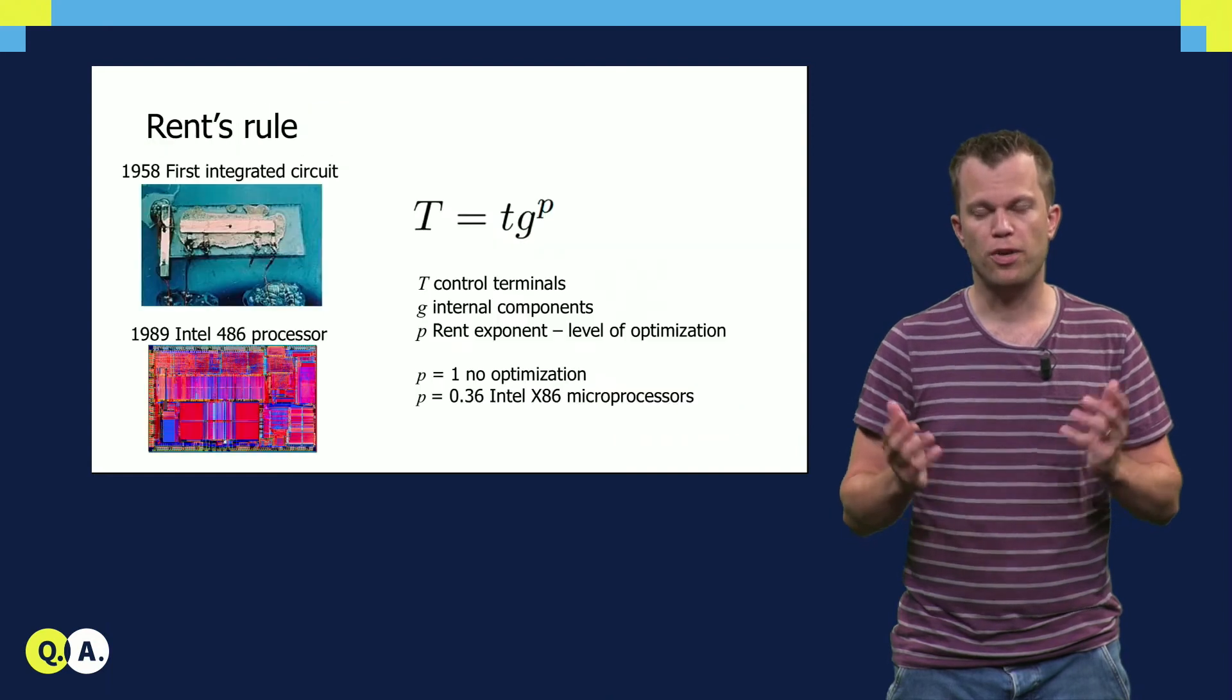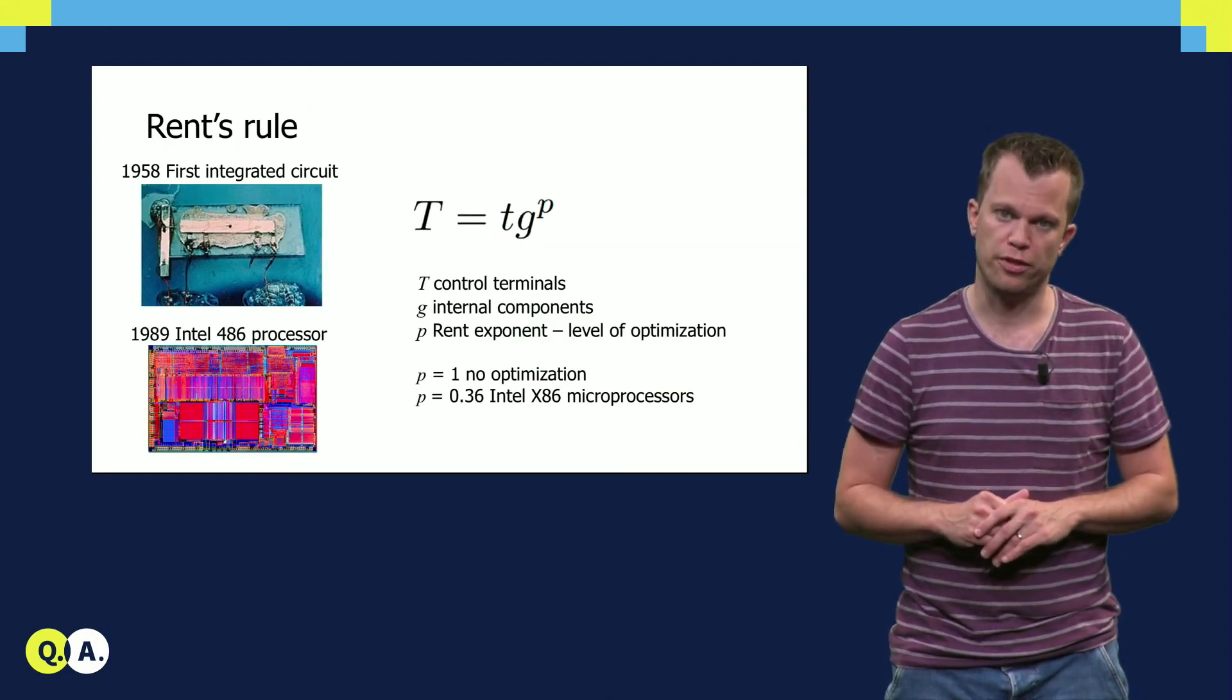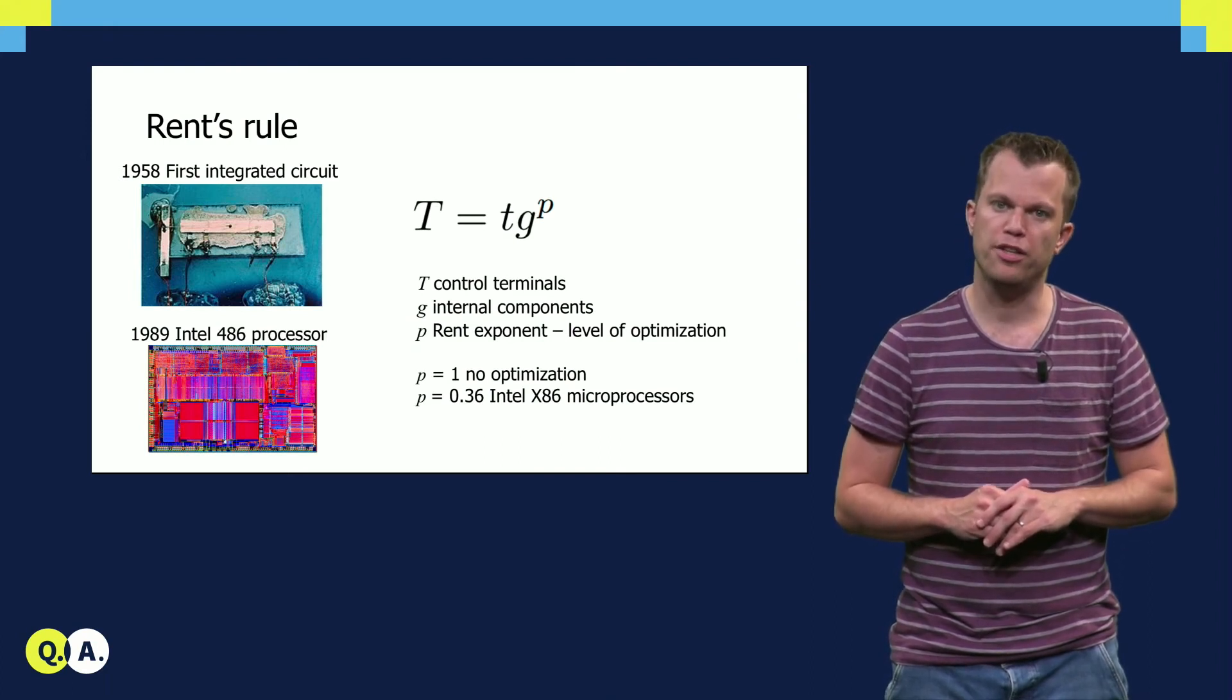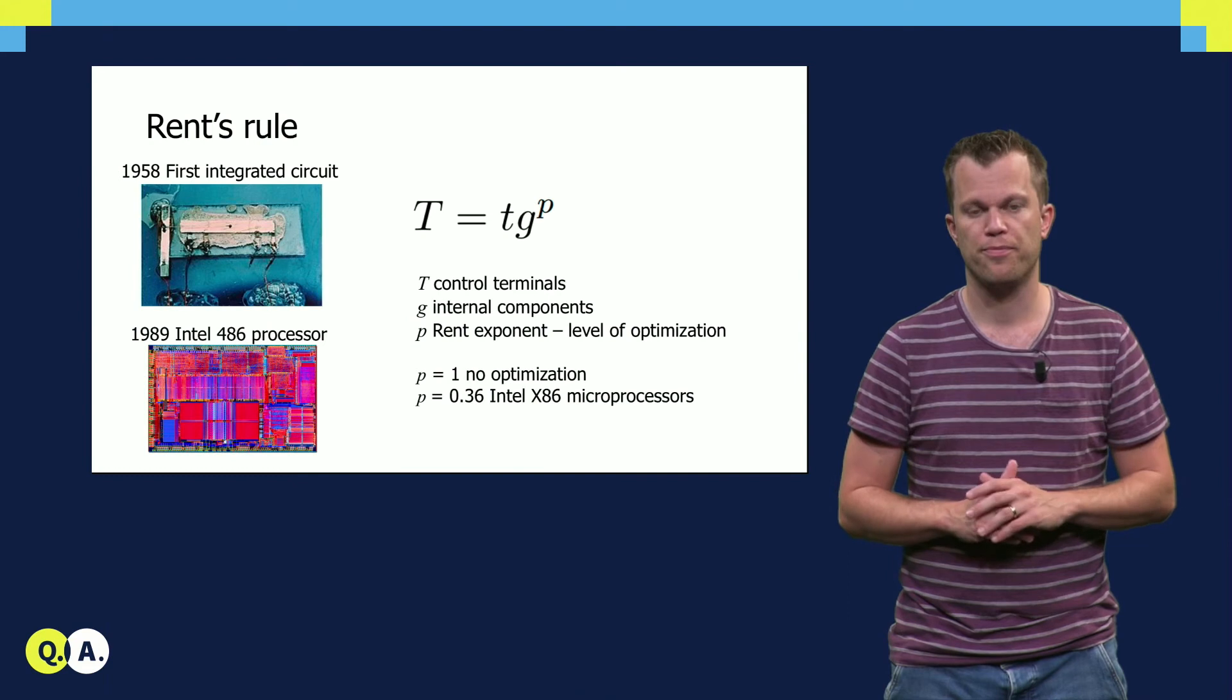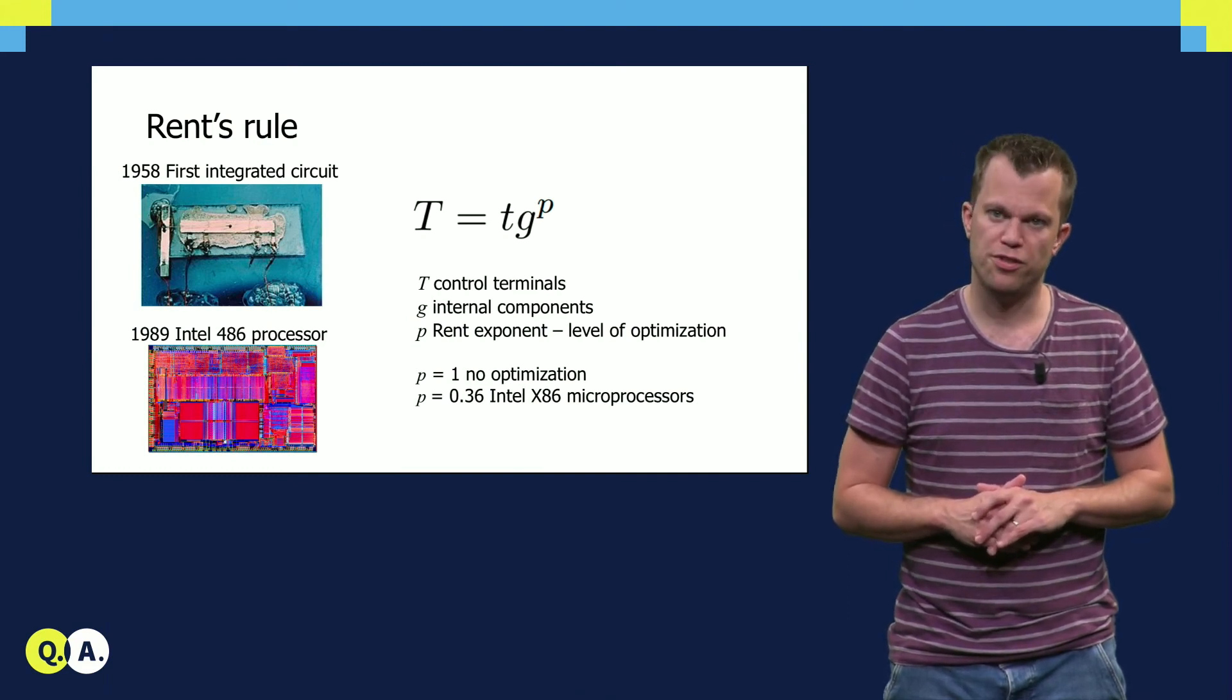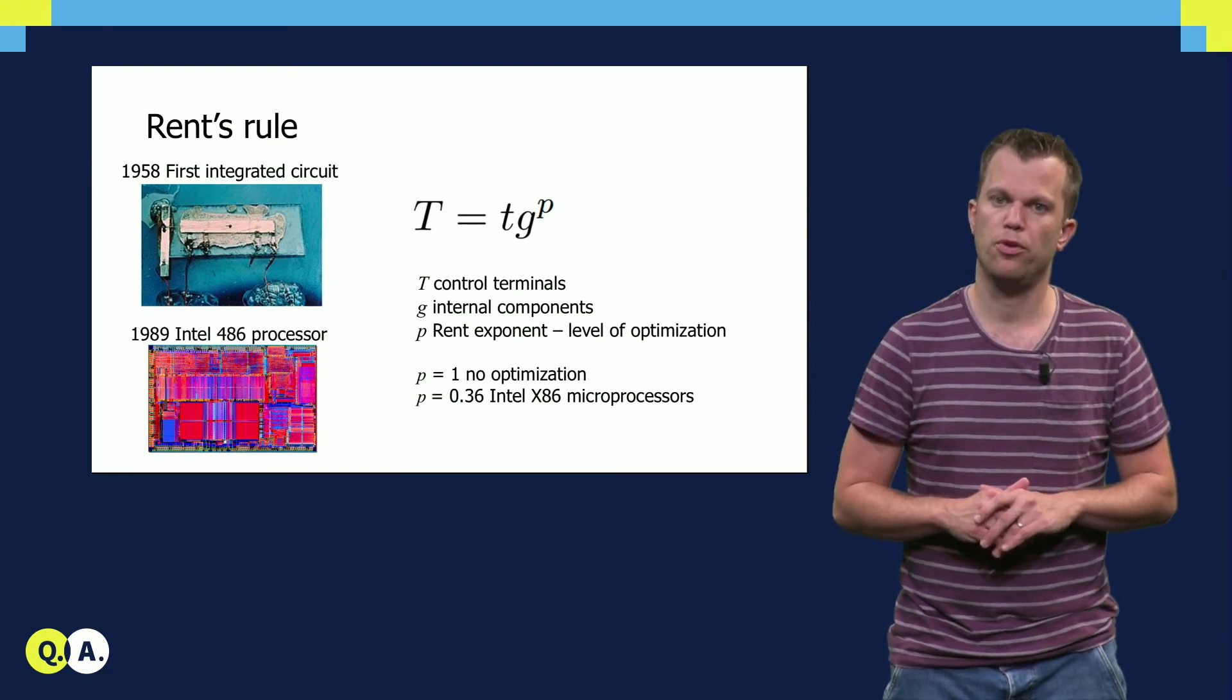For classical electronics, the solution was the invention of the integrated circuit. The power and beauty of these systems become apparent if we compare the numbers of connectors at the outside of the chip to the number of active components inside the chip. Large grid arrays have a couple of thousand connectors, but these can address billions of transistors on a classical processor.